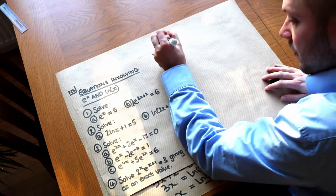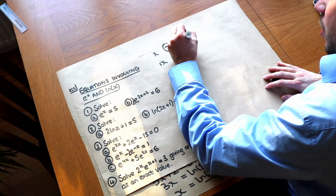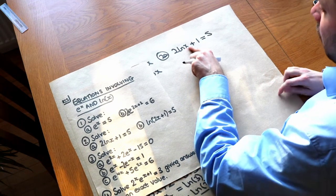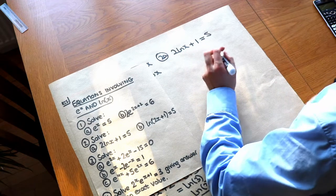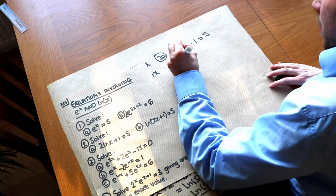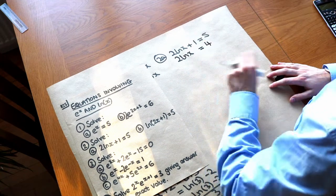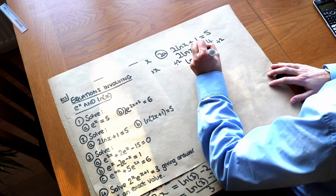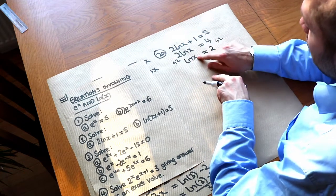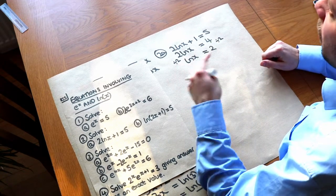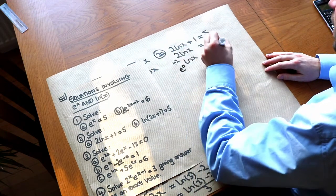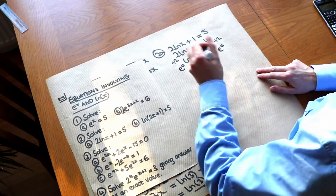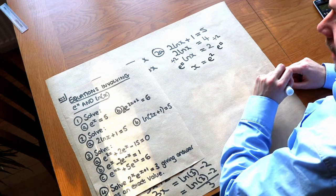Now for equations involving ln. We have 2 ln x + 1 = 5. Let's get x on its own: subtract 1 from both sides to get 2 ln x = 4, then divide both sides by 2 to get ln x = 2. Now to get rid of the ln, we do e to the power of both sides — that gets rid of the ln leaving x, and we get e squared on the right. So x = e² is the exact answer.